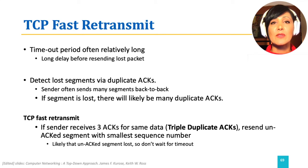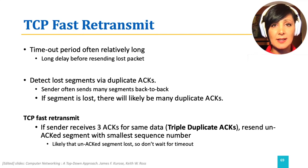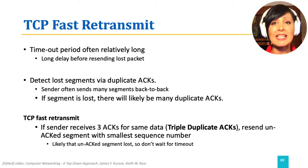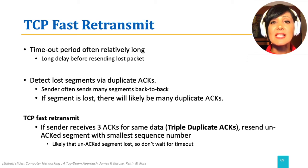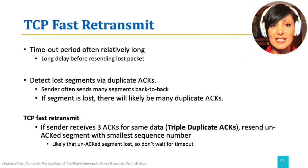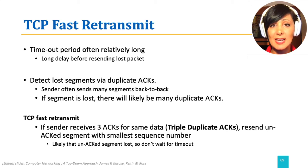If the sender receives three acknowledgements for the same data — an event called triple duplicate ACKs — it will resend the unacknowledged segments with the smallest sequence number. This is because it considers the triple duplicate ACKs as a sign of gaps existing in the receiver side buffer, which might be due to lost segments.